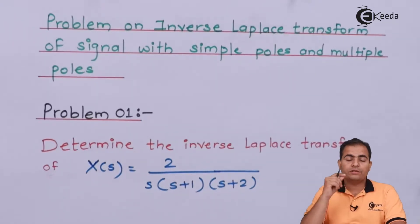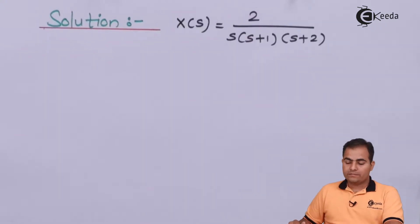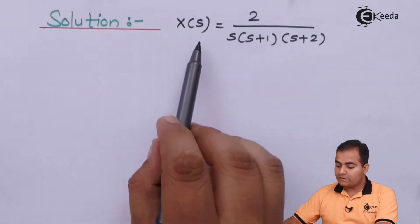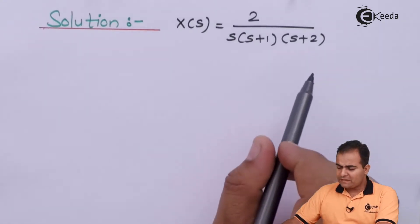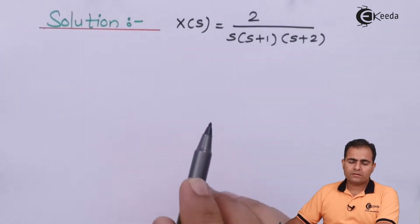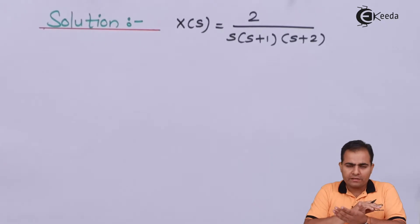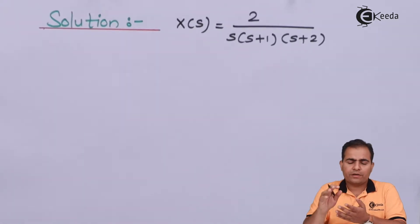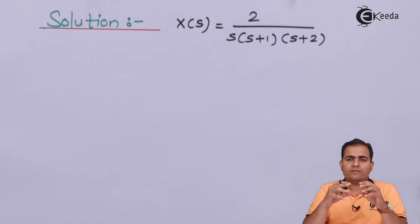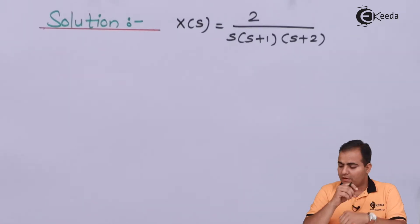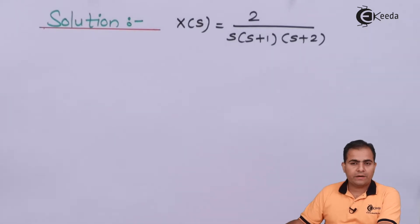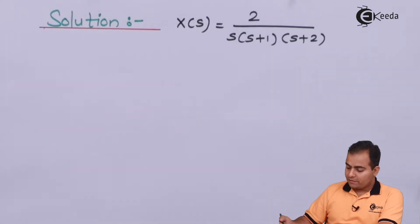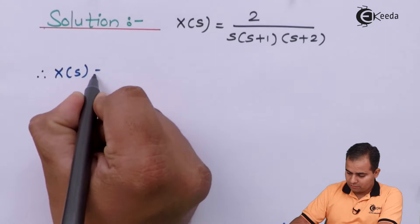Let's go through the solution. The question is X of S equals 2 upon S into S plus 1 into S plus 2. Basically, in inverse Laplace transform, or while finding inverse Laplace or inverse Z or inverse Fourier, we have to take help of a partial fraction. How to solve numerical using partial fraction? I will show you.